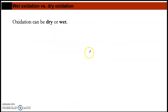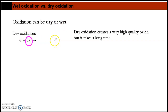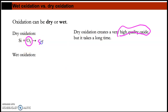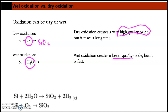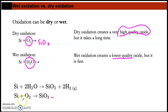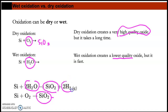Oxidation can be either dry or wet. For dry oxidation, you introduce oxygen gas into the chamber — this produces very high quality silicon oxide but takes a long time, because the reaction is between gas and silicon, producing SiO₂. For wet oxidation, you introduce water vapor (H₂O) into the chamber — the reaction is faster but yields lower quality oxide. The dry oxidation reaction is: Si + O₂ → SiO₂. The wet oxidation reaction produces silicon oxide with hydrogen as a byproduct.